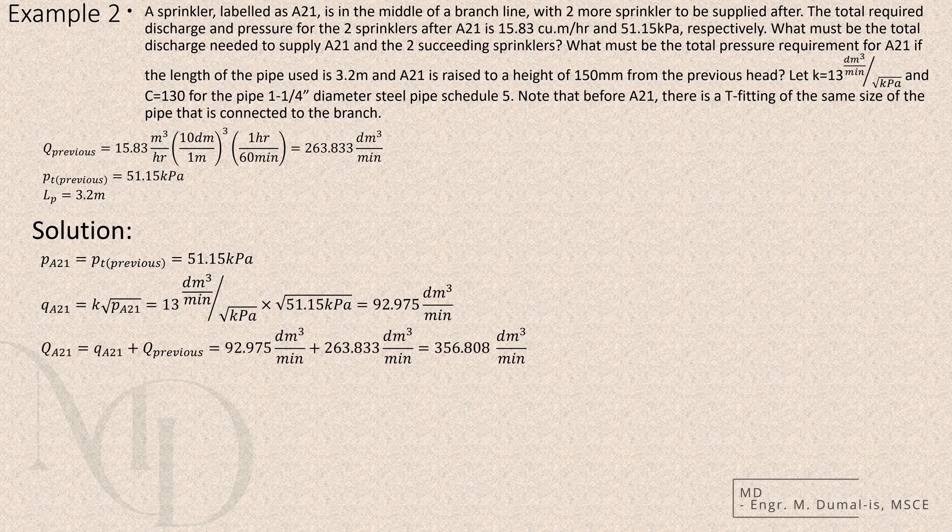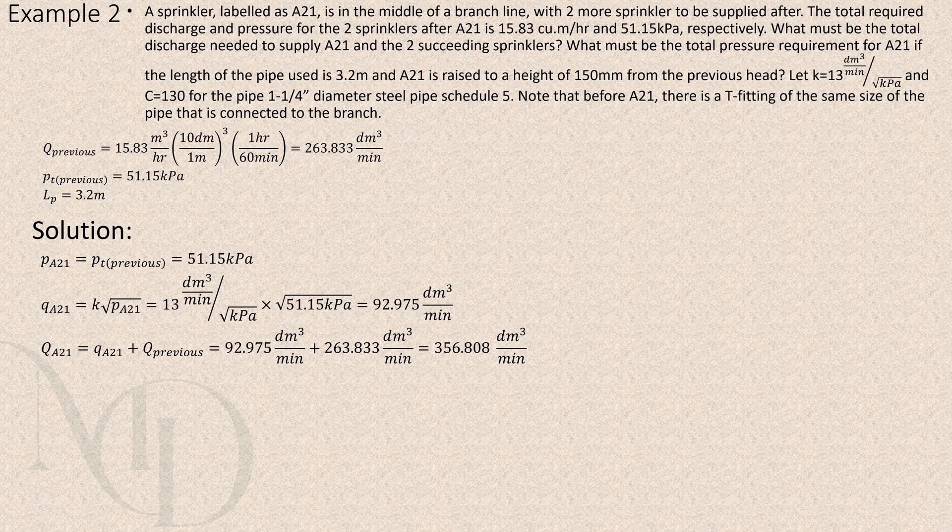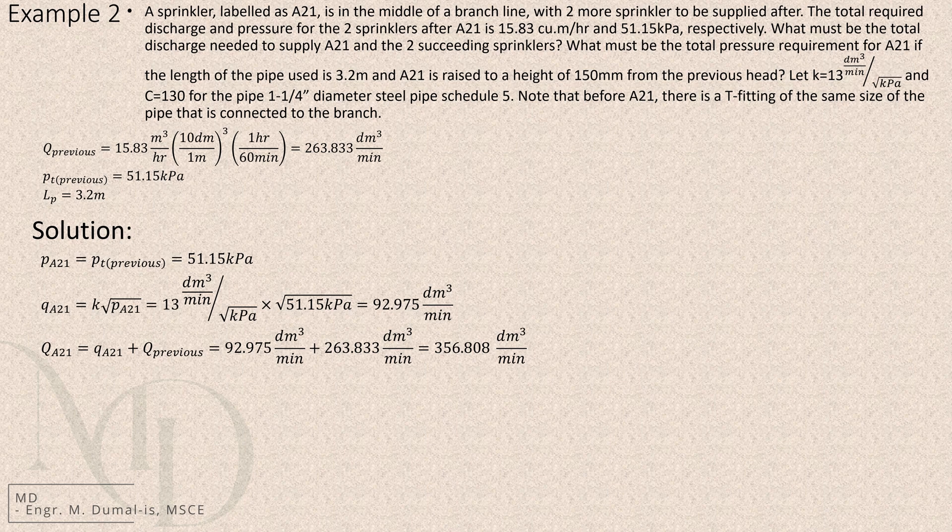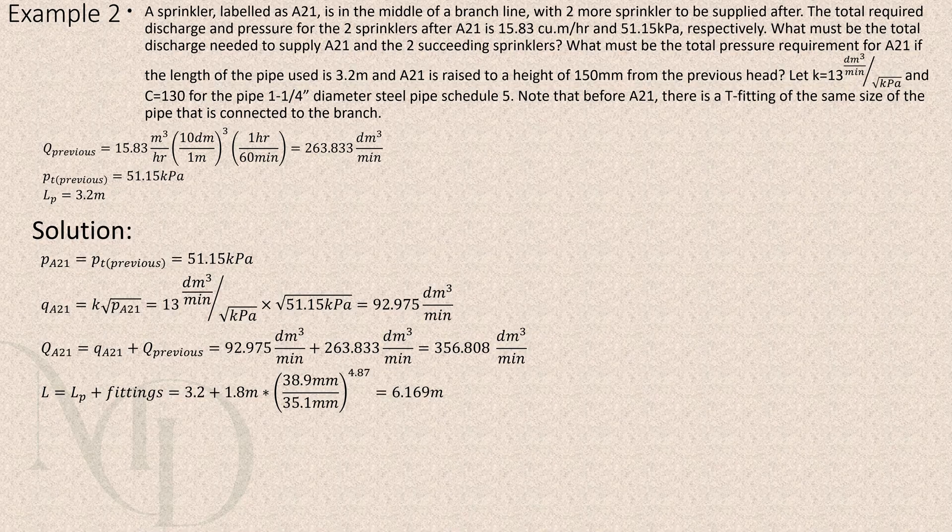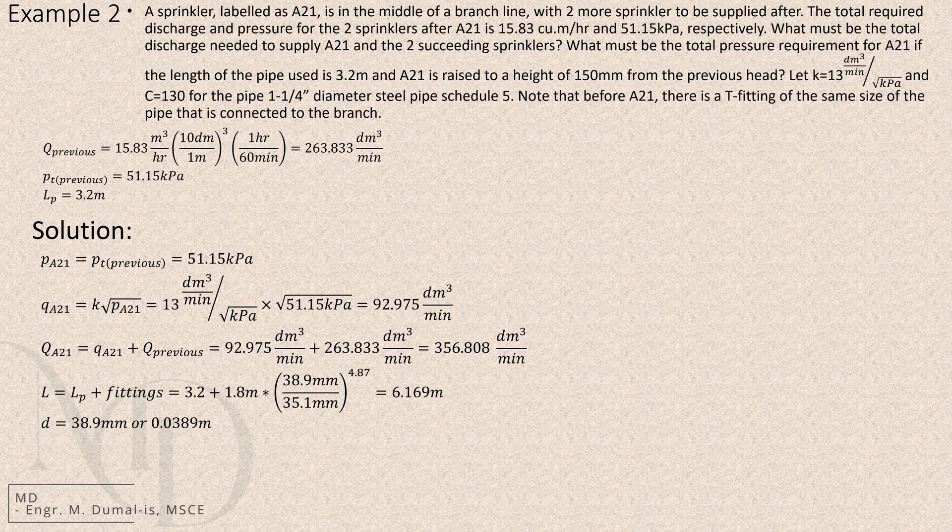After finding that value, we then add the discharge from the two sprinklers located farther along the line together with the discharge of the current sprinkler head. This gives us the total discharge that the pipe section must carry. Once we have that we compute the total length just like what we did in the first example. Now, I did not mention this earlier, but we will identify the inner diameter of the pipe by referring to NFPA 13 2022 edition table A16.3.2.